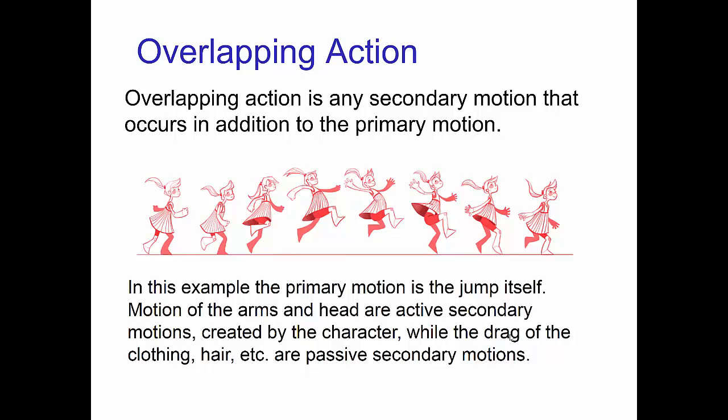For example, if a character is jumping, then the primary motion would be the jump itself. The motion of the arms and the head would be what I'd call active secondary motions.